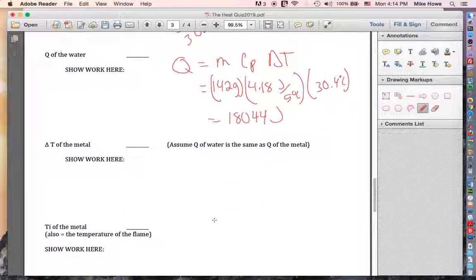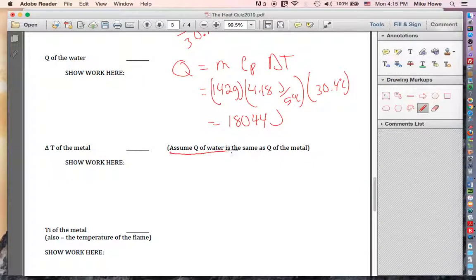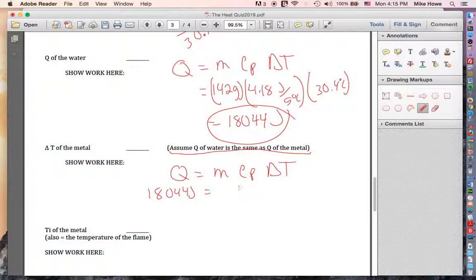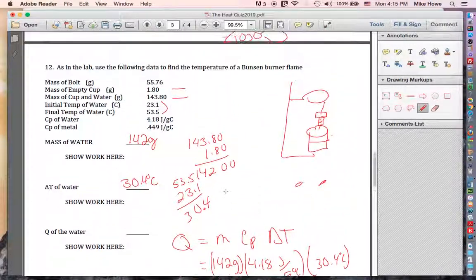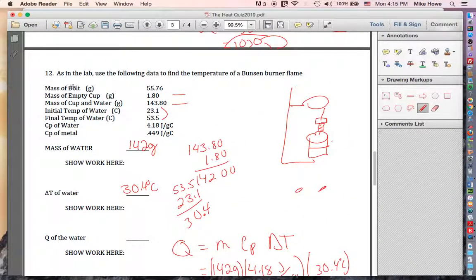So now we need to find delta T of the metal. Now, remember we said that Q of the water is the same as Q of the metal. So do we know Q of the metal? Yes. It's that number right there. We're trying to find delta T. Since that's a formula that has delta T in it, we just use the same formula. Except this time, we know what Q is. Do we know the mass of the metal? I think so. The mass of the bolt was up here. It was 55.76.